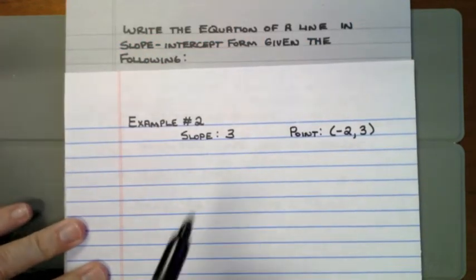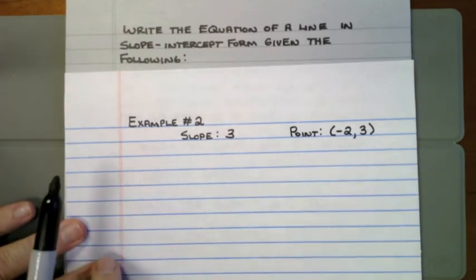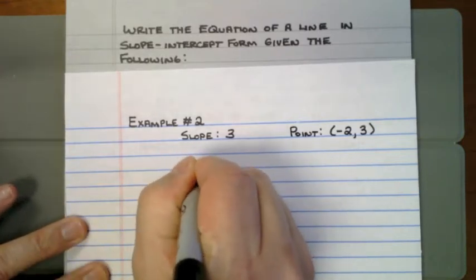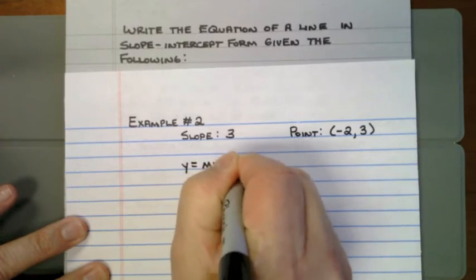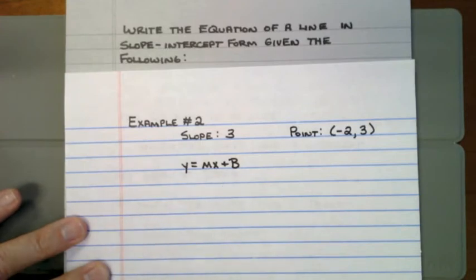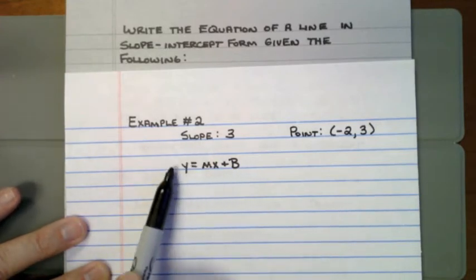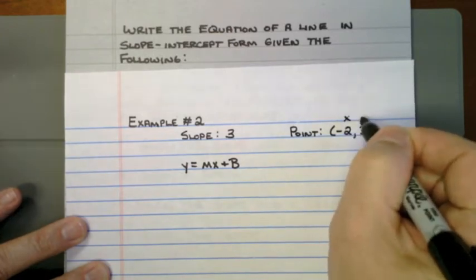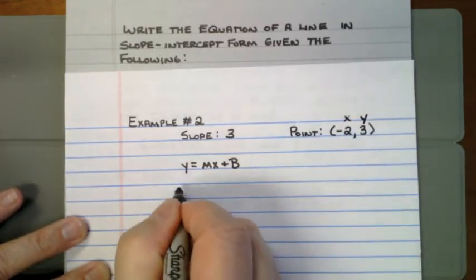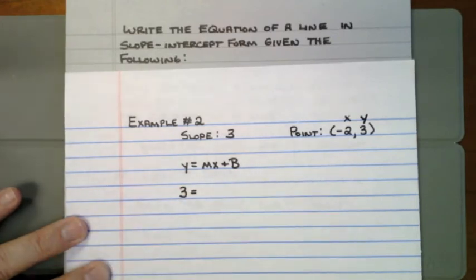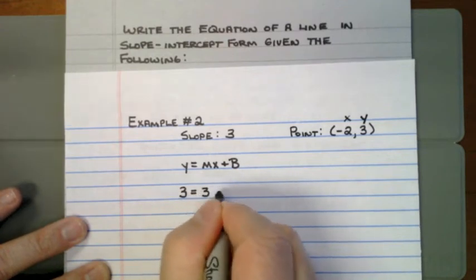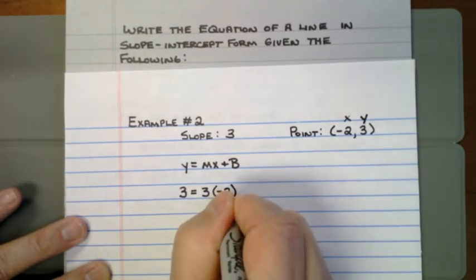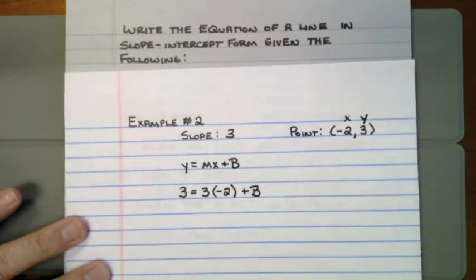Example number two. They've given me the slope and a point on the line. The two things needed to write the equation of a line are a slope and a y-intercept. I'm going to use the slope-intercept formula to figure out the y-intercept — that's b in y equals mx plus b. I need to plug numbers into all the other spots. My y for this problem is 3, so 3 goes in where y is. m represents the slope, which is 3, and my x is negative 2, plus b.